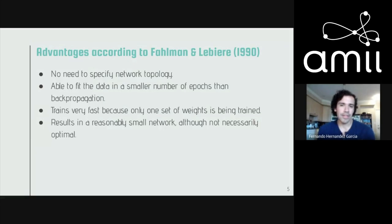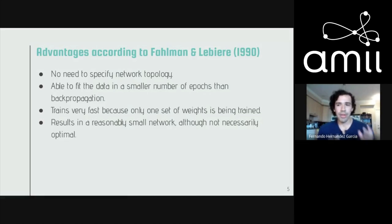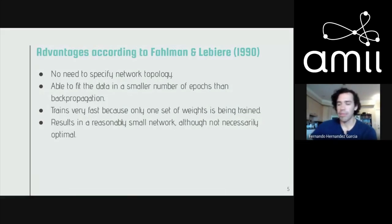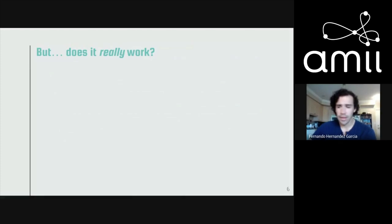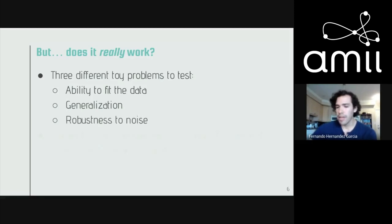After reading this paper, it struck me that given all these advantages, cascade correlation is not that popular nowadays. That pointed to the possibility that somewhere between 1990 and 2020, somebody found this architecture wasn't that great after all. So I set out to determine whether there was something fundamentally wrong with cascade correlation by performing some empirical evaluations — testing its ability to fit data, generalize to unseen data, robustness to noise, and scalability on MNIST.